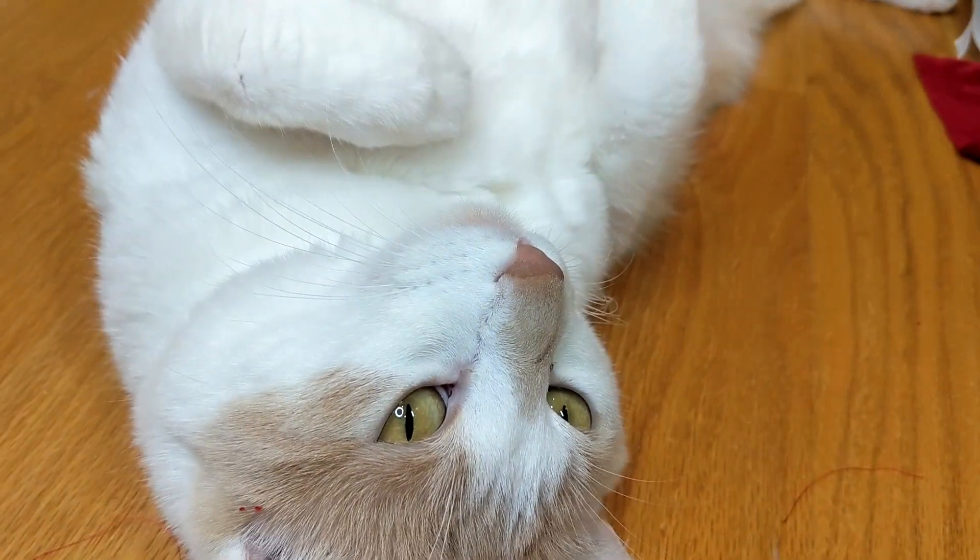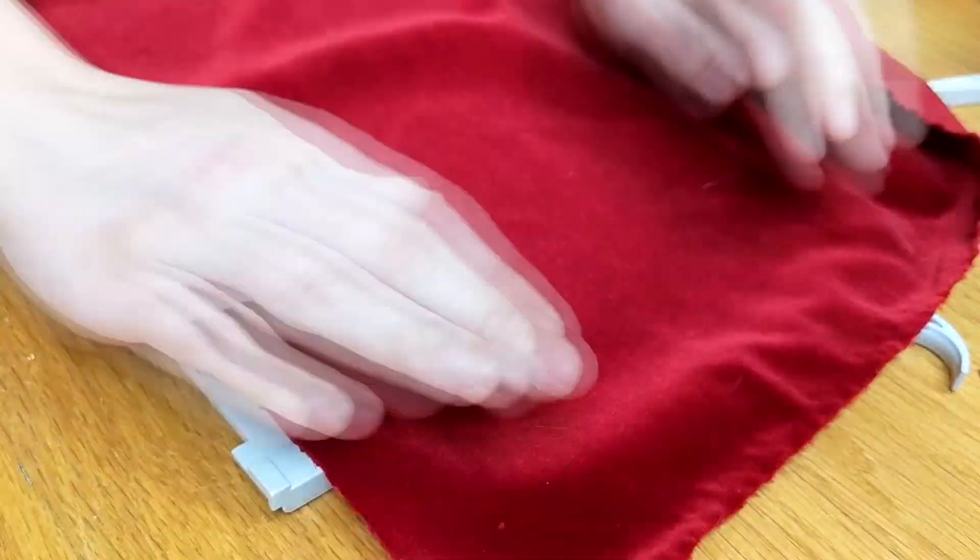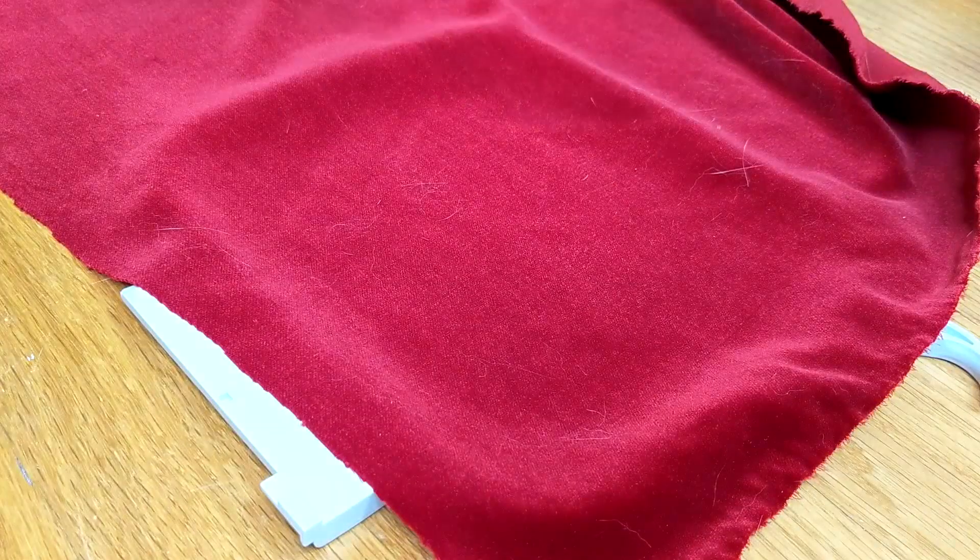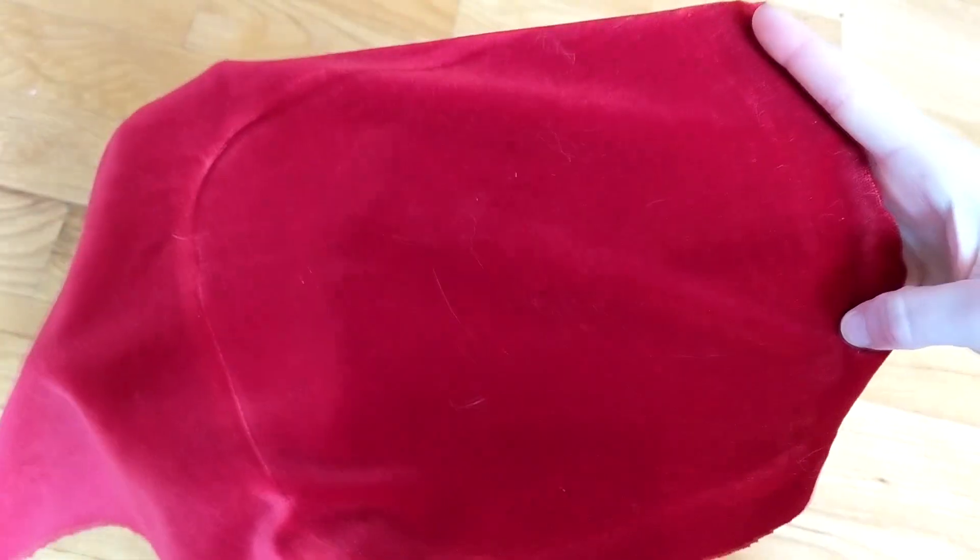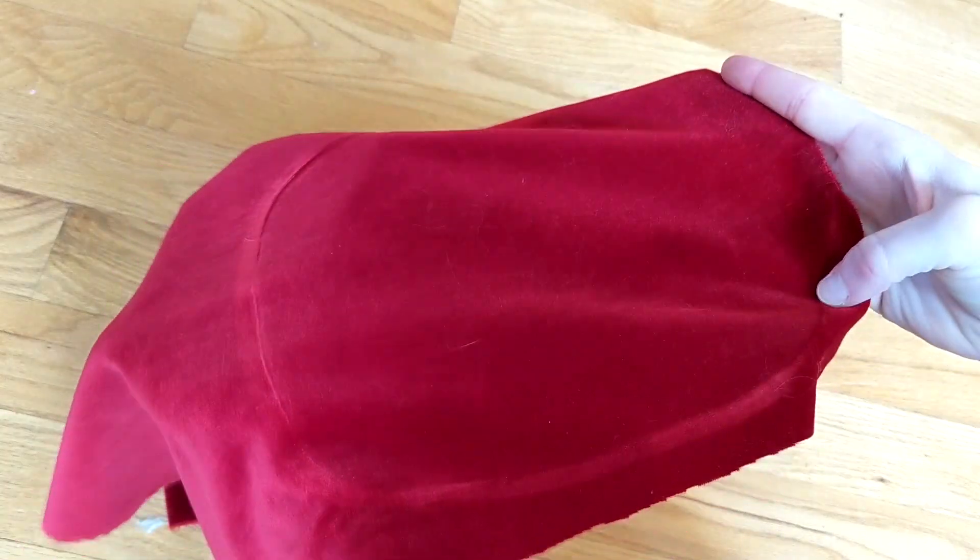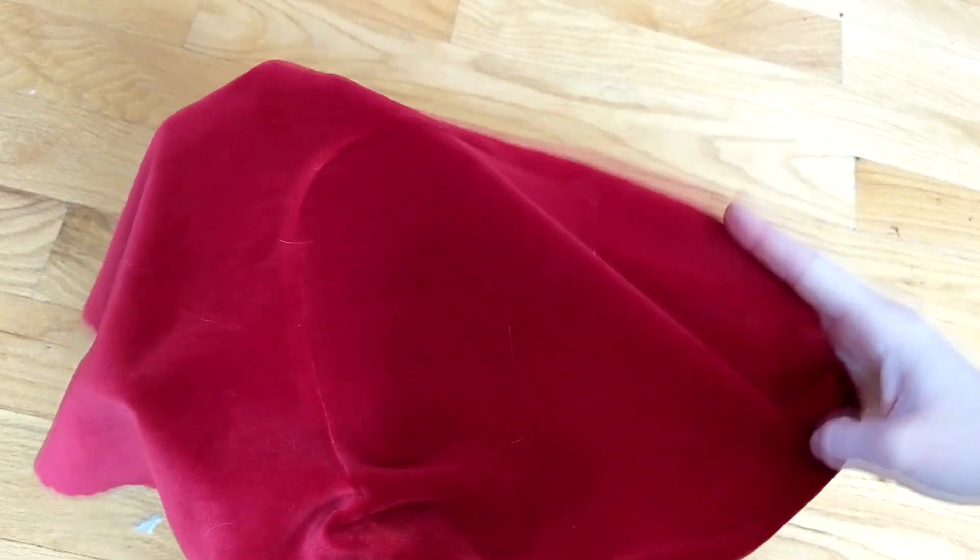So as an example of what to avoid, let's hoop a piece of polyester velvet. To get the tension nice and taut, we need to pull the fabric and pinch it between the upper and lower portions of the hoop. The tension is great, but after unhooping, you can see the slight discoloration where the hoop crushed the pile. This is what we don't want.